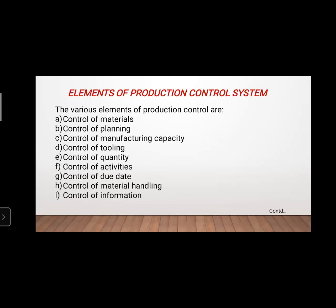The eighth element is control of material handling. Material handling is a conveyor used to transfer materials or products from one place to another. Different types of conveyors exist — belt conveyors, rope conveyors, and others you have learned in IEM subjects. We must control whether the conveyor is used for a single product or multiple products. If the conveyor system has a robotic arm, it can hold any number of pieces from any edge.